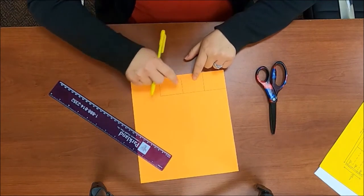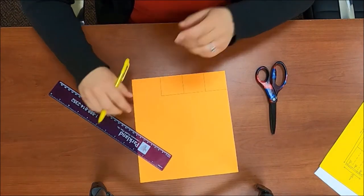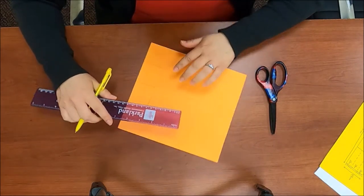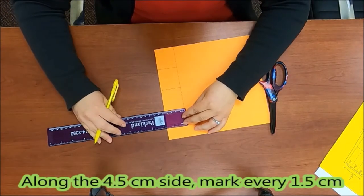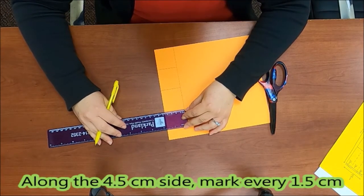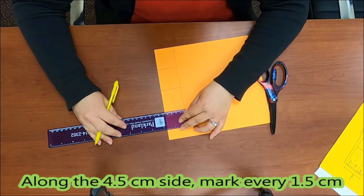So the middle square is going to be your body and then we need to make the legs and the head and the tail. So over here on that 4.5 wide side you're gonna make marks every 1.5 centimeters.